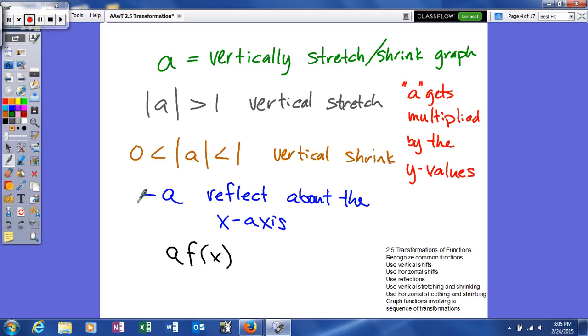Now if A is negative, it's going to cause you to reflect about the x-axis. Now in your function, as you can see, A is going to be the coefficient of f of x. So it's going to be on the outside of your parent function being multiplied by that.